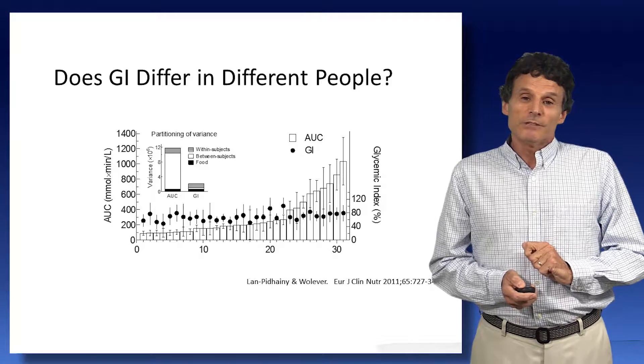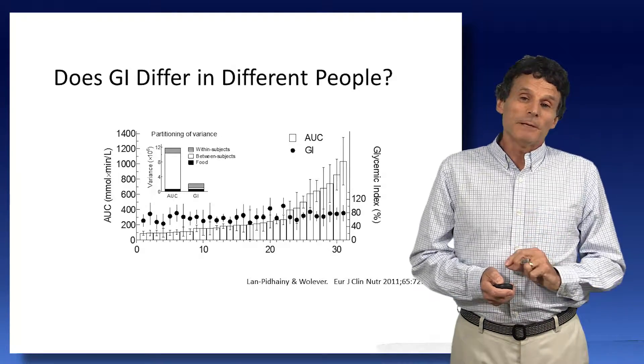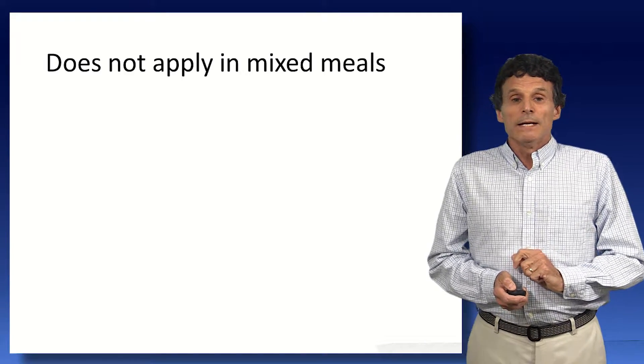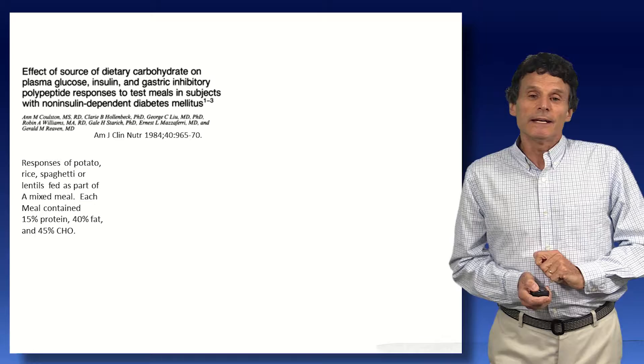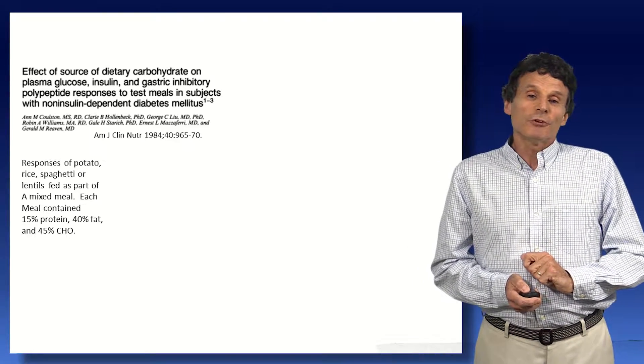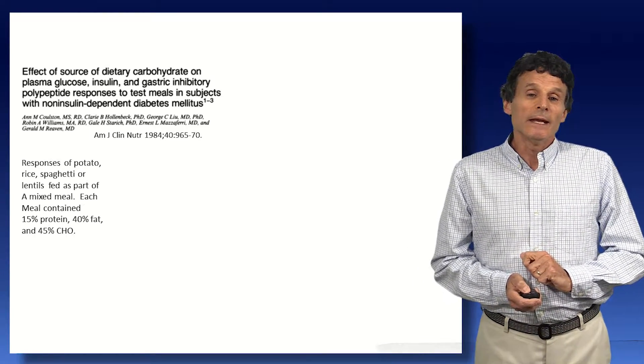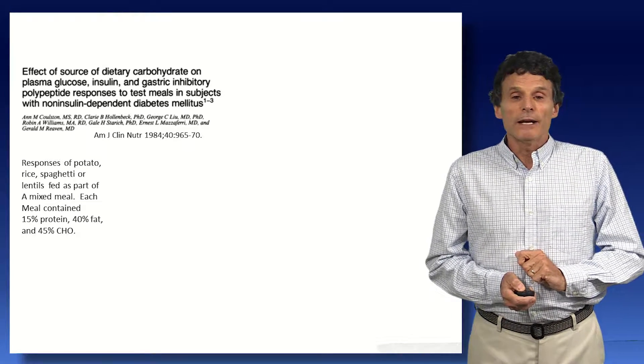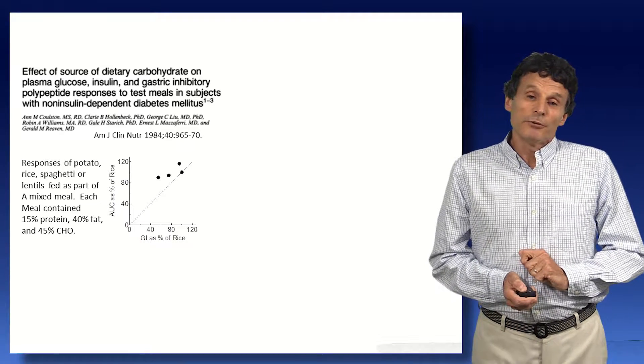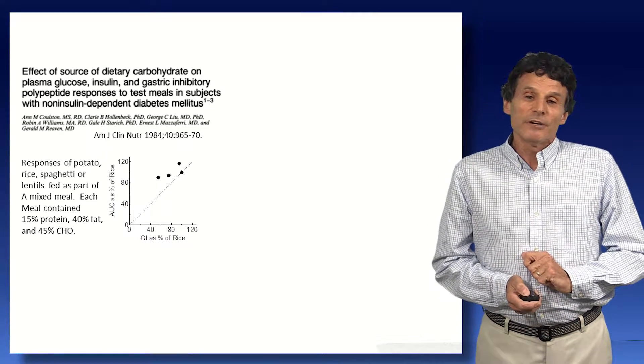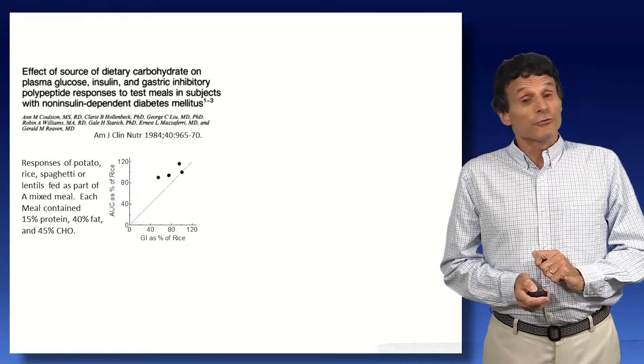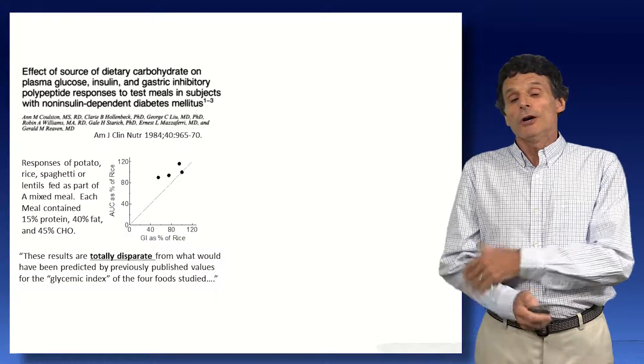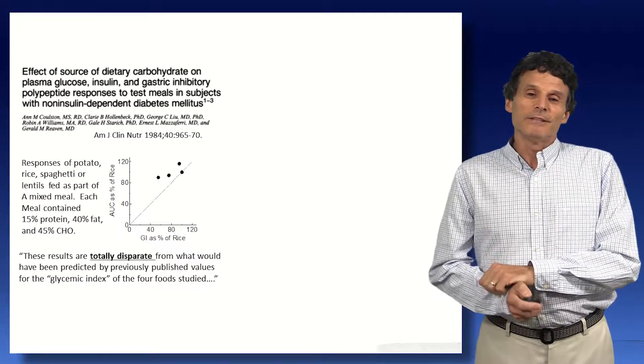There's certainly variation. This is due to day-to-day variation within subjects, and that tells us how many people we ought to be able to use, or should use, to get an accurate result. Does it apply in mixed meals? And Jerry Riven did a study in 1984, where they looked at the responses to potato, rice, and spaghetti in a mixed meal, and all the meals contained the same amount of protein, fat, and carbohydrate. And they showed that their interpretation was the GI values of the foods varied over a twofold range. The glucose responses varied by only a very small amount. And they concluded that the results are totally disparate from what would have been predicted by the GI.